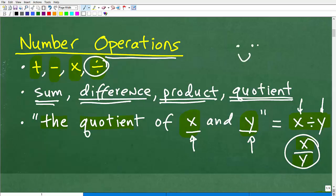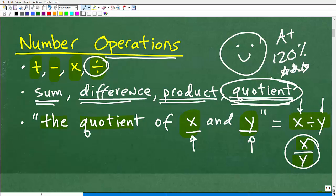I don't want to just leave without giving you a nice, lovely, happy face. And A plus, I'll give you 120% for today's work and multiple stars so you can have extra special day. So that's pretty good if you actually got the quotient. But I would say out of all these terms, number operations, the quotient seems to confuse a lot of people and the difference as well.